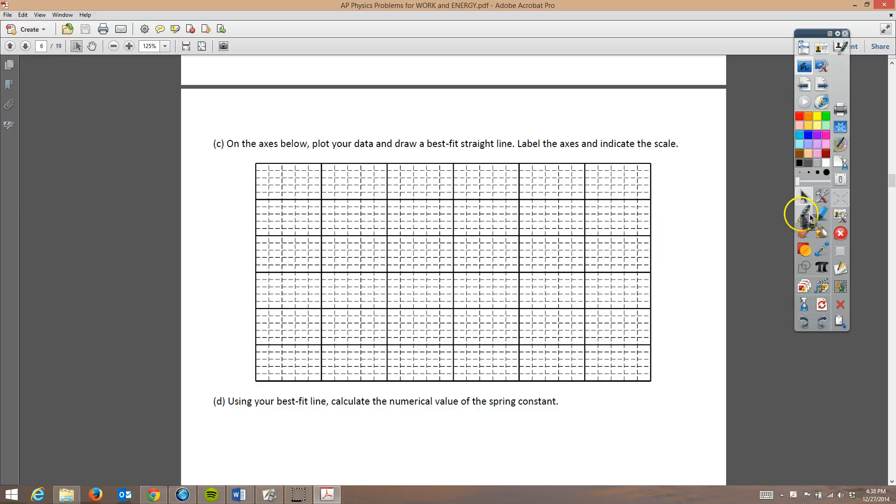All right. Sorry about the glitch there. We're back. And now they want us to go ahead and plot all of our data. So to plot the data, we've got to put our points on the graph. So one of the points that you get for this is just making sure that you know where your axes should be and that you've labeled them correctly. So this is the height. It's in meters. We're going to make this 0.5, 0.4, 0.3, 0.2, 0.1. We are going to make this 0.